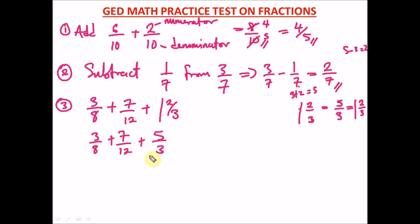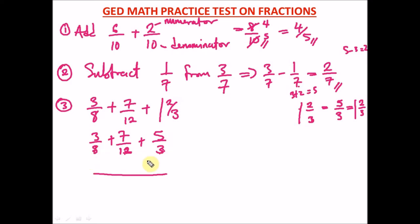A simple trick to find the LCM: multiply two of the numbers. 8 times 3 is 24. Can we also get multiples of 12 from 24? Yes — 2 times 12 is 24. So 24 works for all three denominators. You can see why knowing your times tables is so important in fractions.